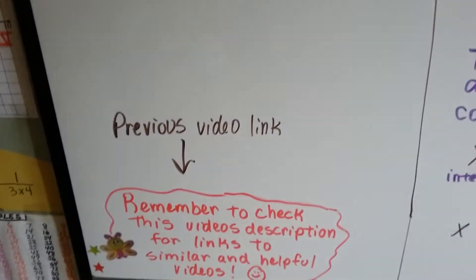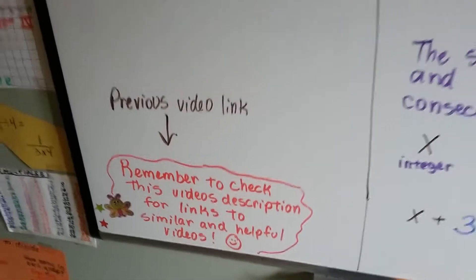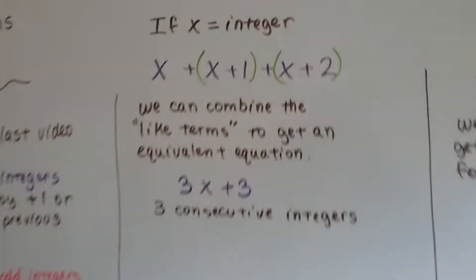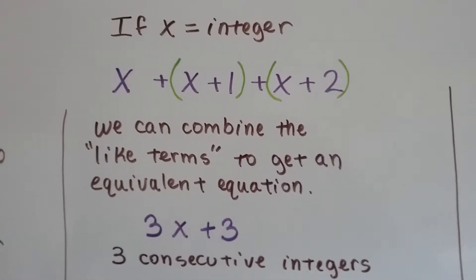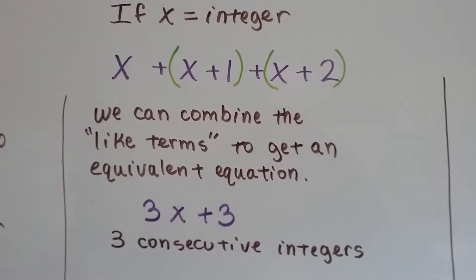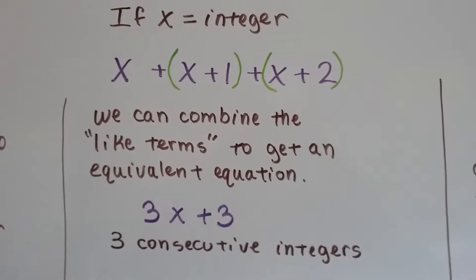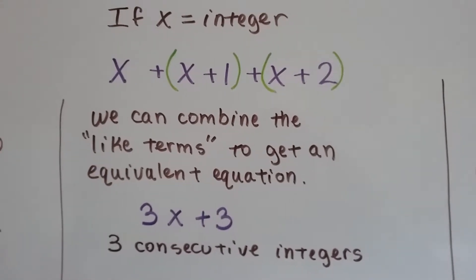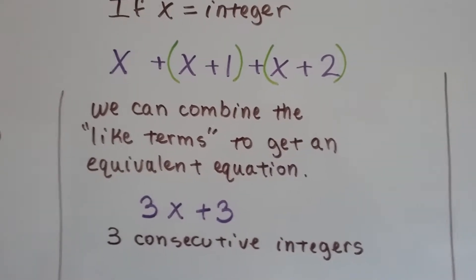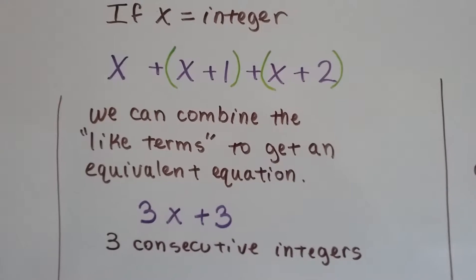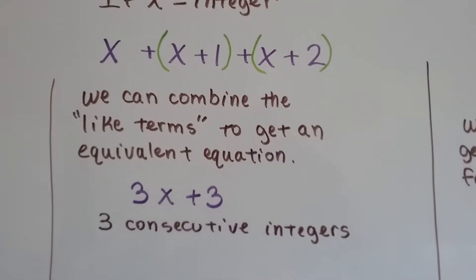There's going to be a link to the previous video in this description and other links to helpful videos. So if x equals an integer, then x plus x plus 1 plus x plus 2 would give us three consecutive integers. x would be the first one, x plus 1 would be the second one, and x plus 2 would be the third one. We can combine these like terms to get an equivalent equation — there are three x's and it's plus 3, since 1 and 2 equal 3. So 3x plus 3 would be that new equivalent equation.